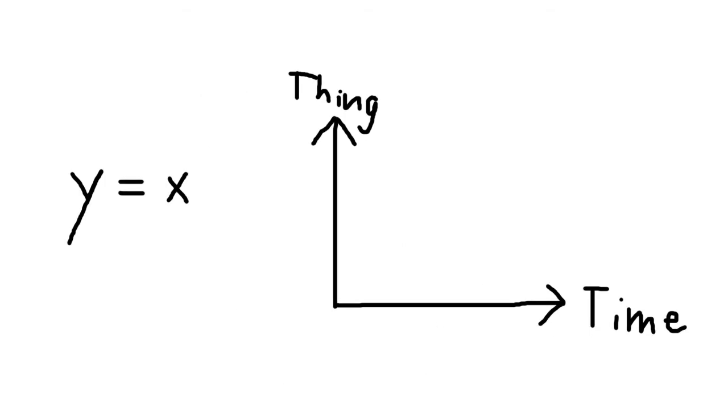For a graph like y equals x, for every one we move to the right, we move one up. So the slope is 1. But what if we had a wacky graph, like this?